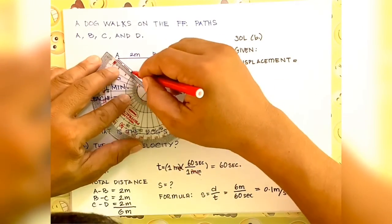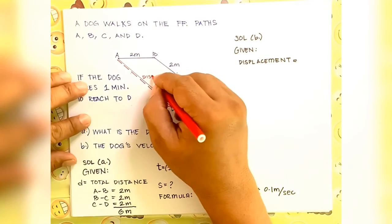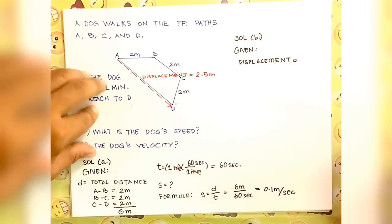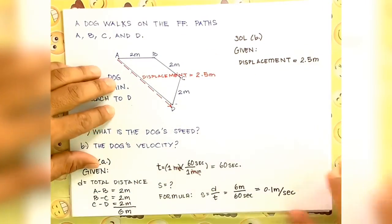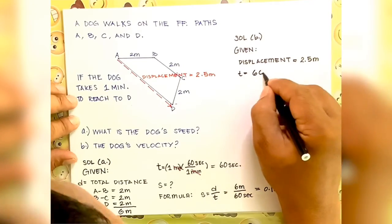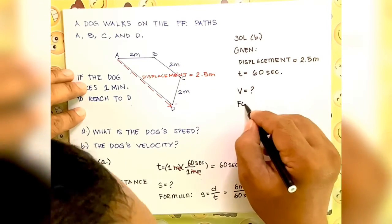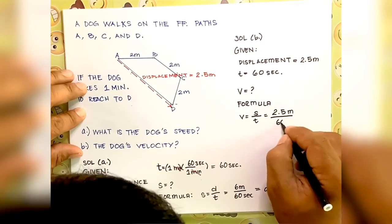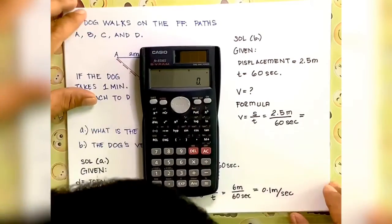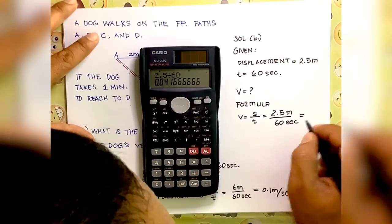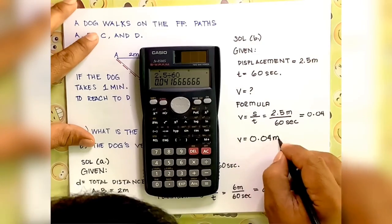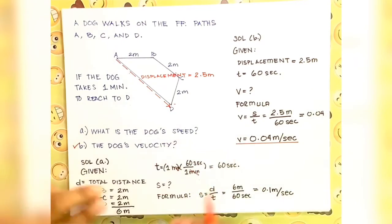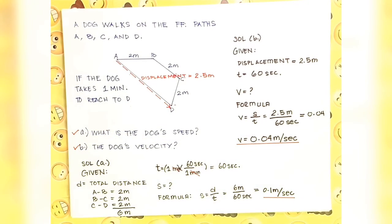Now for solving letter B, the dog's velocity: the displacement — the difference between the initial position and the final position — is equivalent to 2.5 meters. Time is still 60 seconds. The velocity formula is displacement over time: 2.5 meters over 60 seconds. Using the calculator, that results in 0.04 meter per second. So we are able to solve both A and B. Thanks for watching.